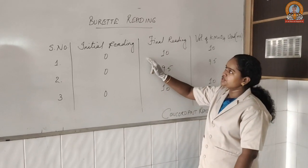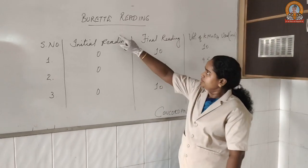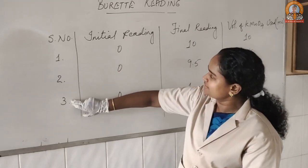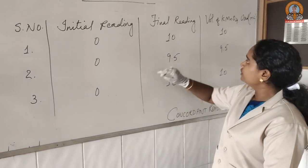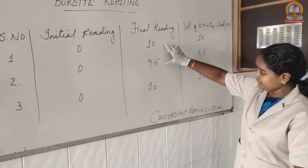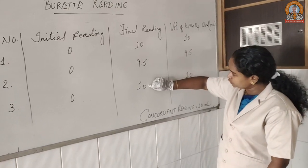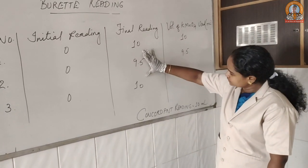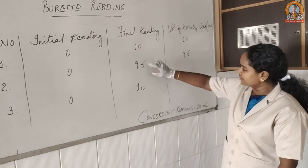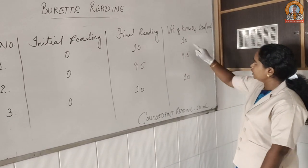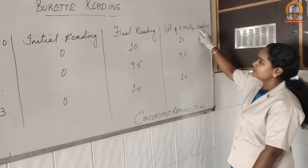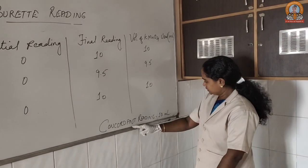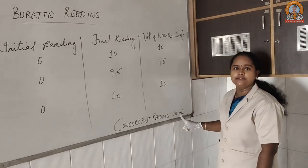Our observation table now shows the burette readings. I have taken three readings. The initial reading was zero each time. For the final reading, out of three trials, two readings were 10 mL and one was 9.5 mL. So I got my concordant reading as 10 mL — the volume of KMnO₄ used each time.